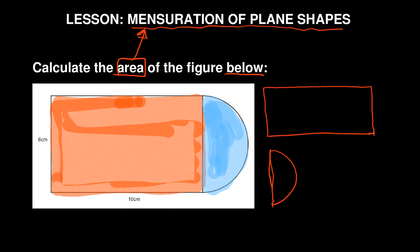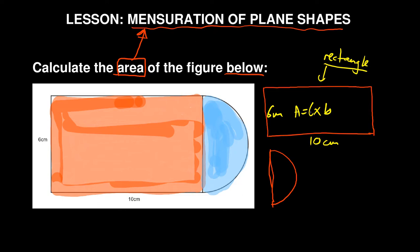You are given the dimensions: 6 centimeters and 10 centimeters. This shape is a rectangle, and you need to know the area of a rectangle — it is length times breadth. Area equals length times breadth, where this is your length and this is your breadth. For the semicircle, the easier way is to start from the area of a full circle.